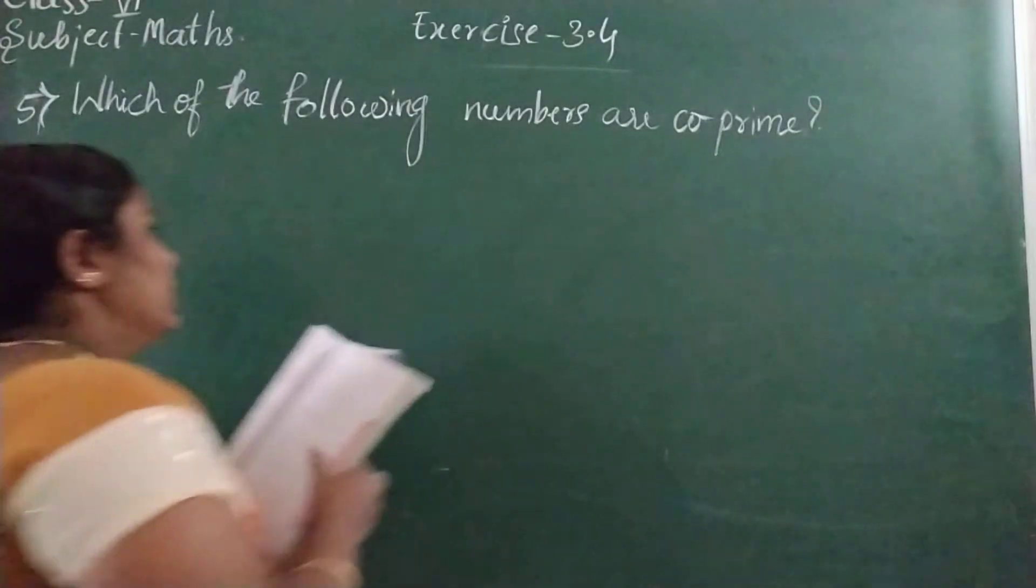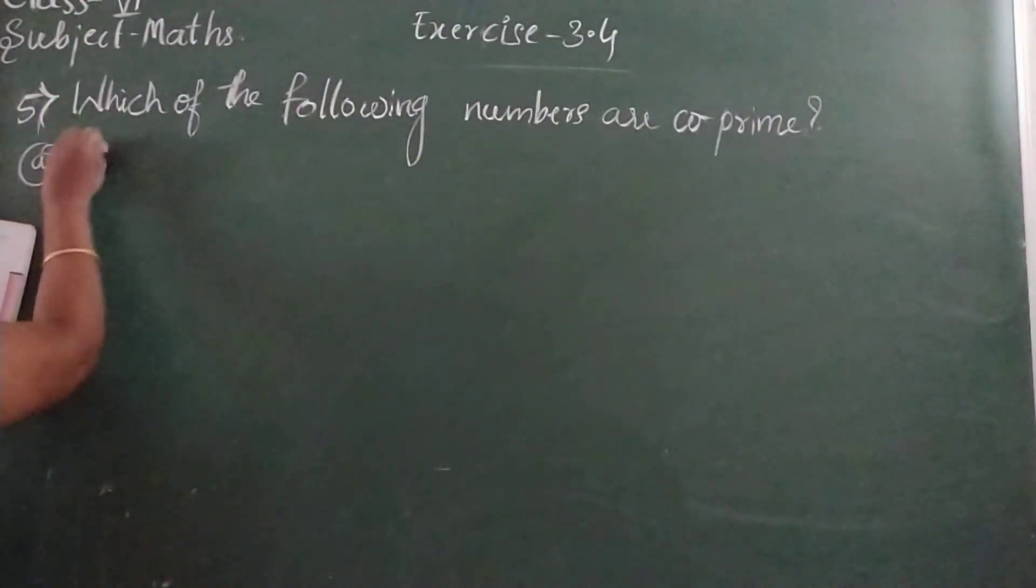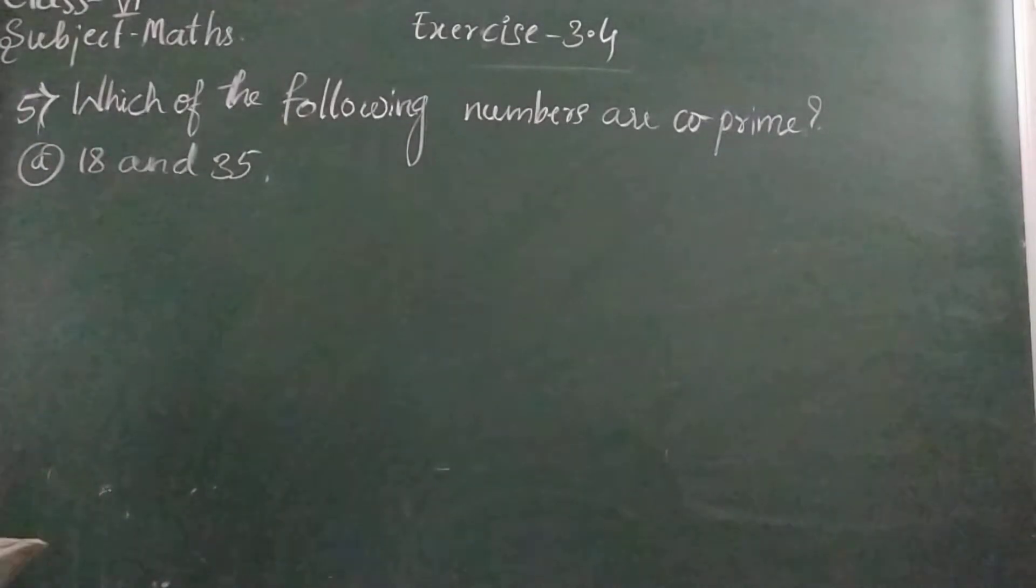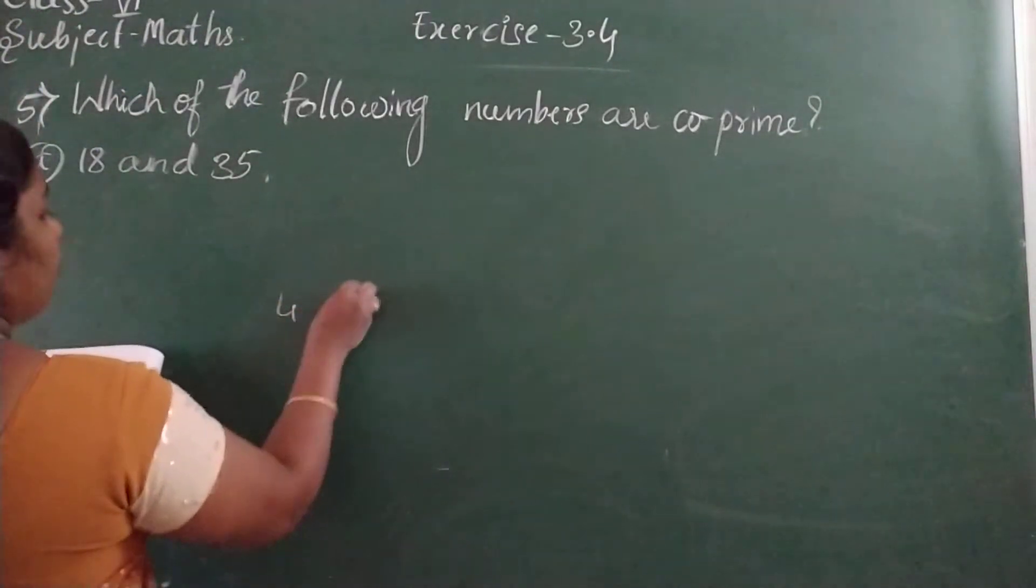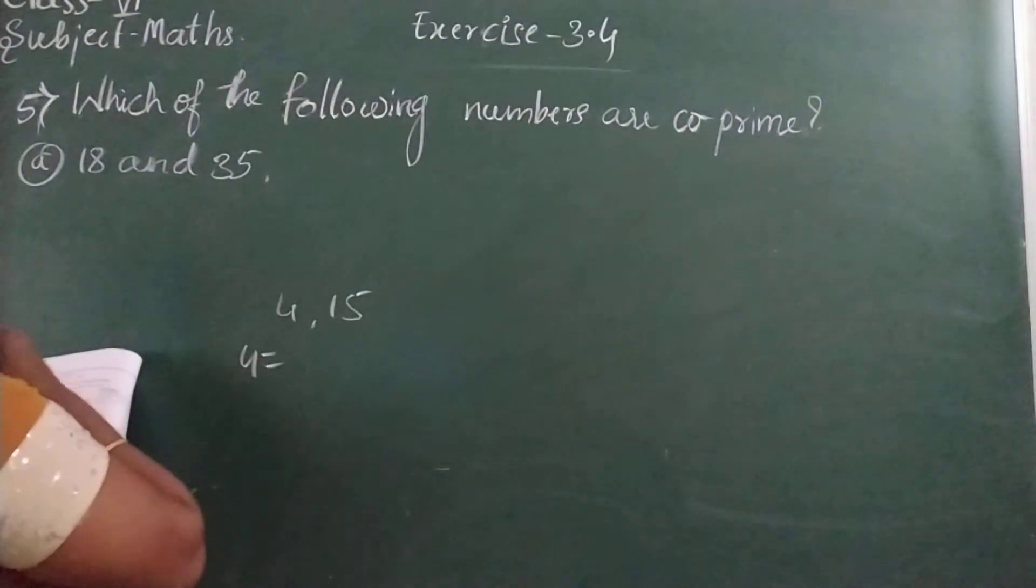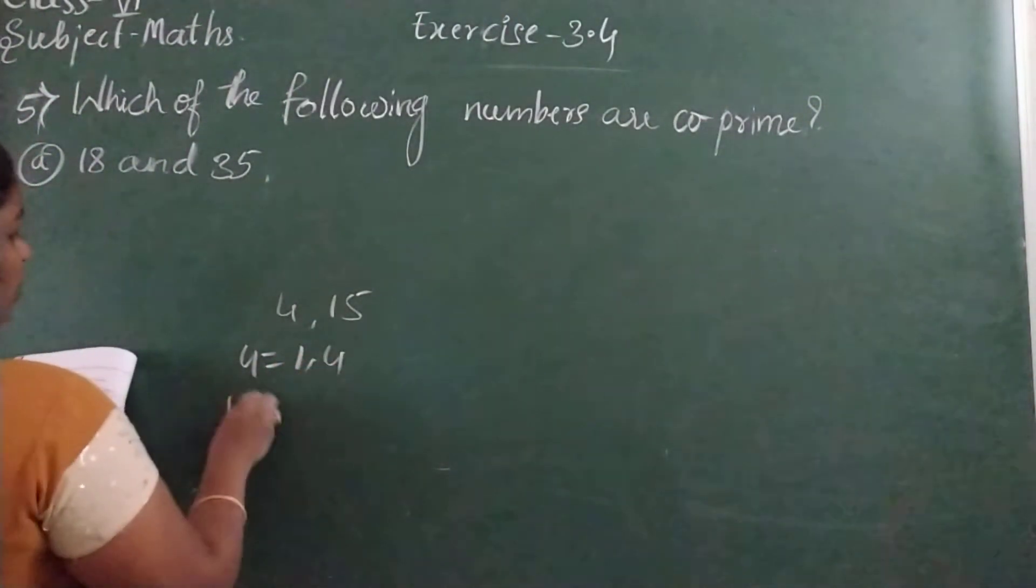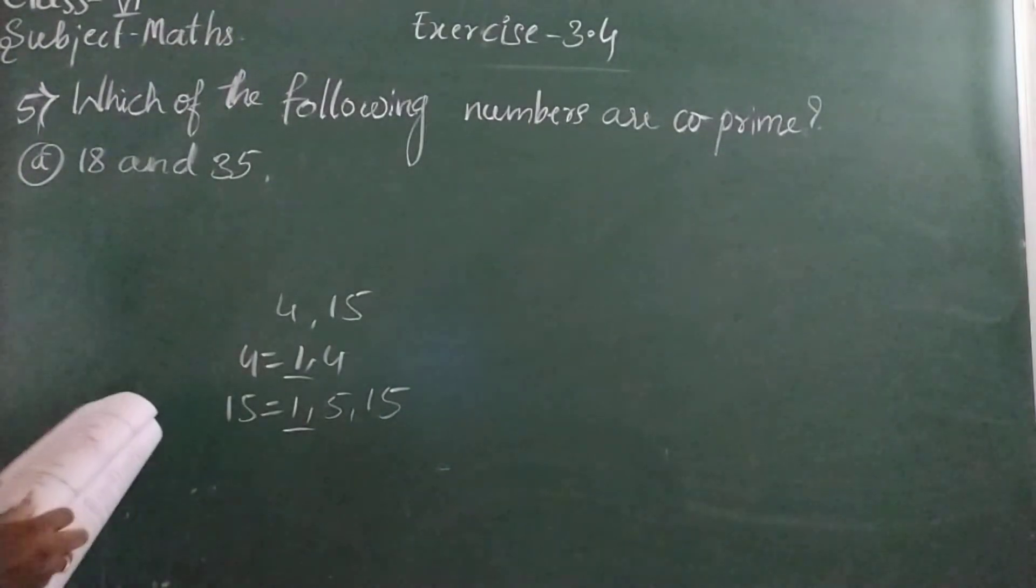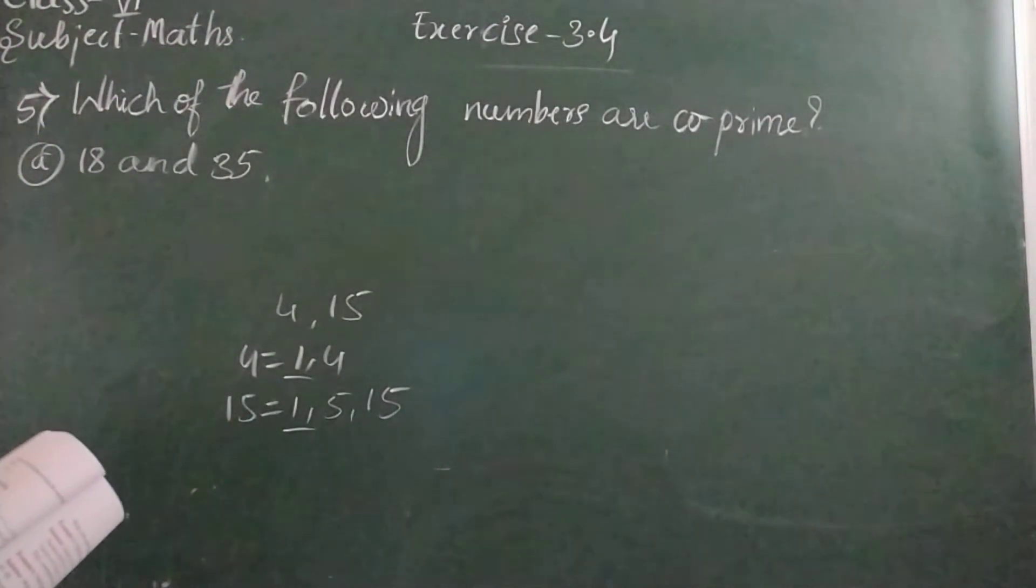To identify this, you should know what is co-prime. Two numbers having only one as a common factor are called co-prime numbers. Two numbers should have only one common number. That is known as co-prime. I will take one example: 4 and 15. Take the factors of 4: 1 and 4. Factors of 15: 1, 5, and 15. Here, what is the common factor? That is 1. So these are known as co-prime numbers. 4 and 15 are co-prime numbers.